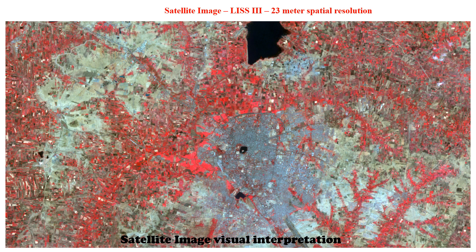If we see this image, it is captured by at least three sensors and the spatial resolution of this image is 23 meters. It is a false color composite image — we can call it the FCC image. In this image, the red color represents the greenery of the ground surface, or it is vegetation cover. If the red color is represented in a rectangular or square shape, it means these are agriculture plots, and if it is represented in a continuous patch, it means it is forest land.